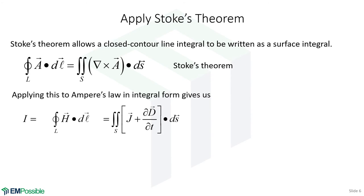Well, we just wrote Ampere circuit law in integral form, and it had a closed contour line integral. Let's apply Stokes theorem to that and write that as a surface integral of curls. So this line integral of magnetic field now becomes a surface integral integrating the curls of the magnetic field.